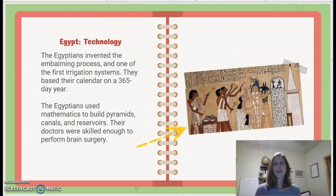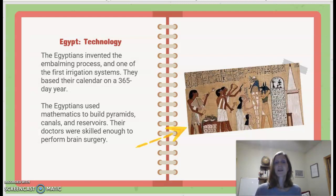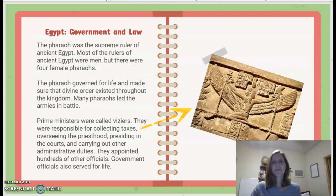Egypt Technology: The Egyptians invented the embalming process and one of the first irrigation systems. They based their calendar on a 365-day year. The Egyptians used mathematics to build pyramids, canals, and reservoirs. Their doctors were skilled enough to perform brain surgery — certainly not like today, but definitely skilled.